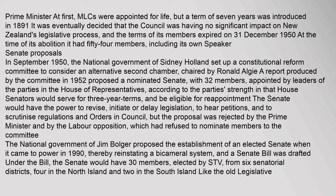Senate Proposals: In September 1950, the National Government of Sydney Holland set up a Constitutional Reform Committee to consider an alternative second chamber, chaired by Ronald Algie. A report produced by the committee in 1952 proposed a nominated Senate with 32 members, appointed by leaders of the parties in the House of Representatives according to the party's strength in that House. Senators would serve for three-year terms and be eligible for reappointment. The Senate would have the power to revise, initiate or delay legislation, to hear petitions, and to scrutinise regulations and orders in council. However, the proposal was rejected by the Prime Minister and by the Labour Opposition, which had refused to nominate members to the committee. The National Government of Jim Bolger proposed the establishment of an elected Senate when it came to power in 1990, thereby reinstating a bicameral system, and a Senate bill was drafted. Under the bill, the Senate would have 30 members.